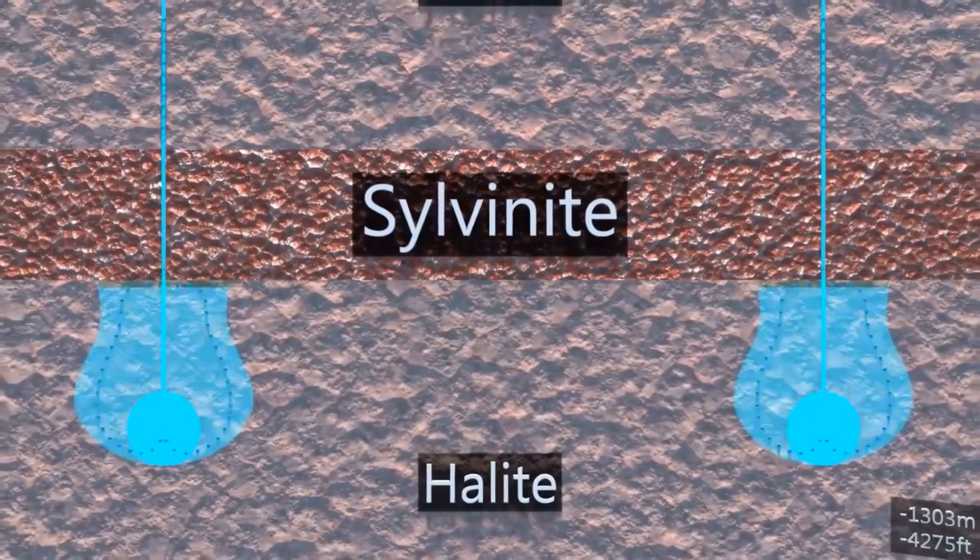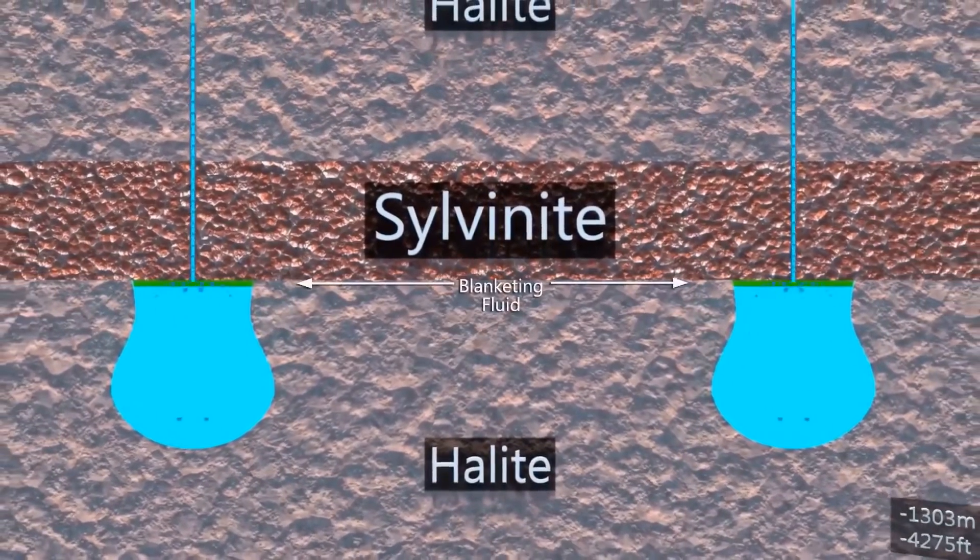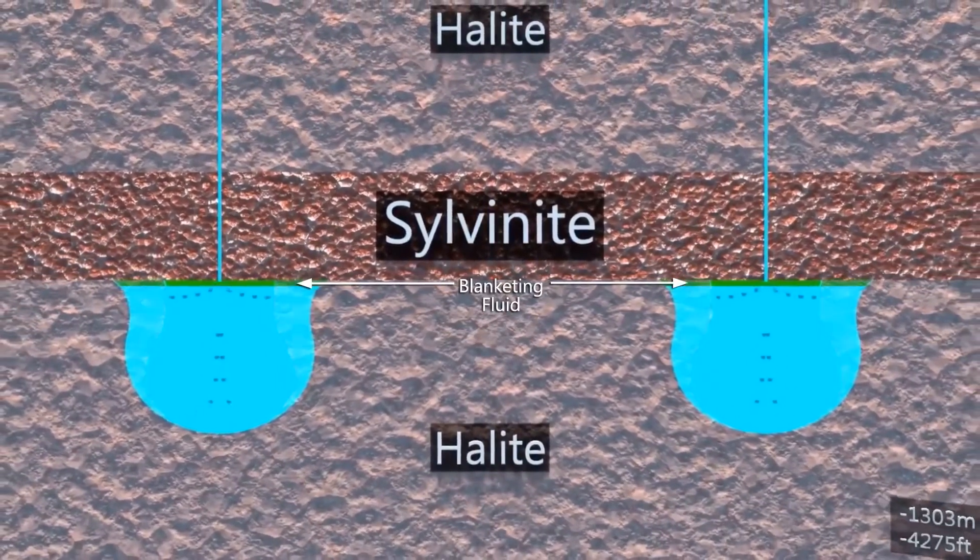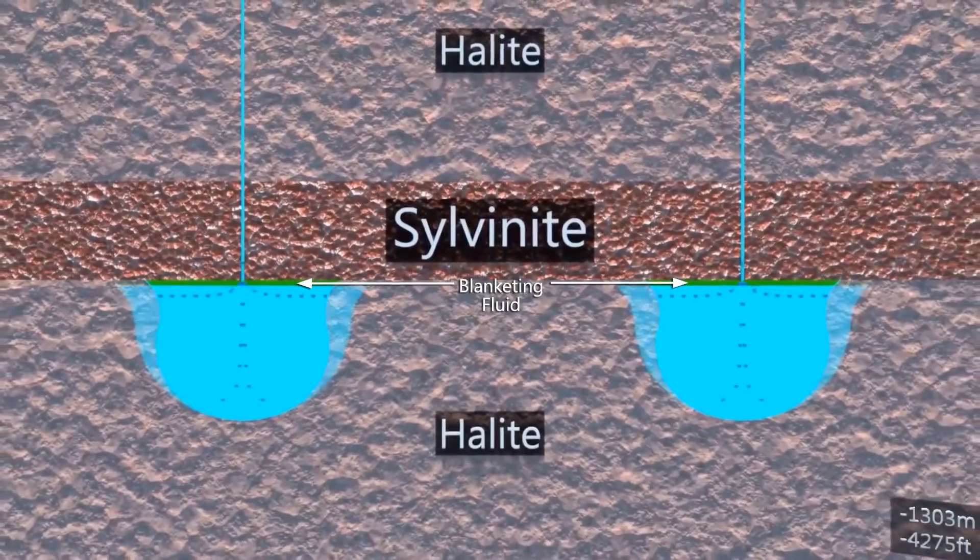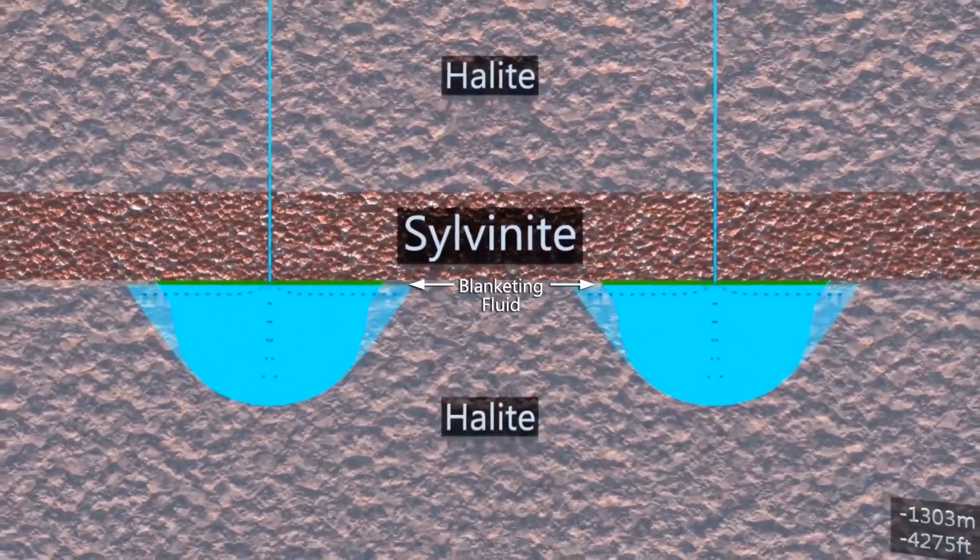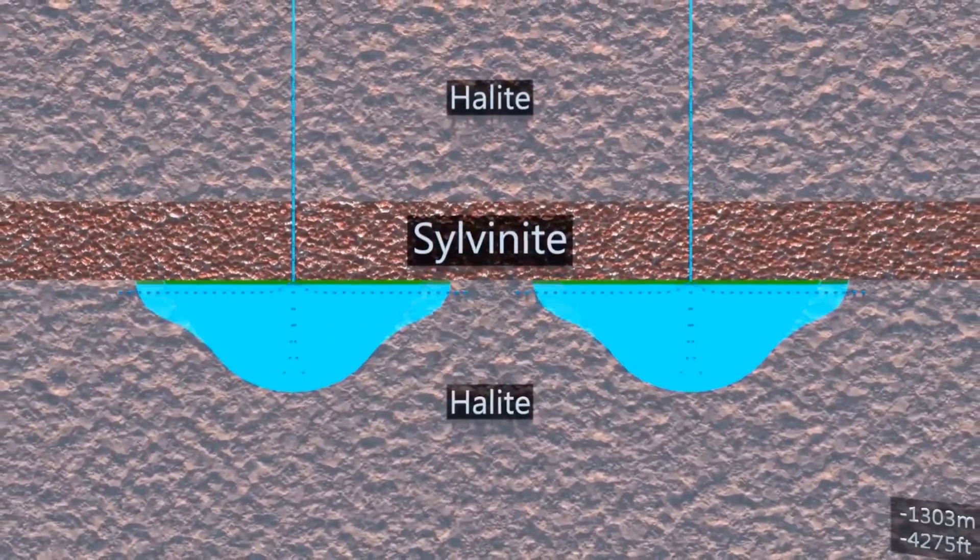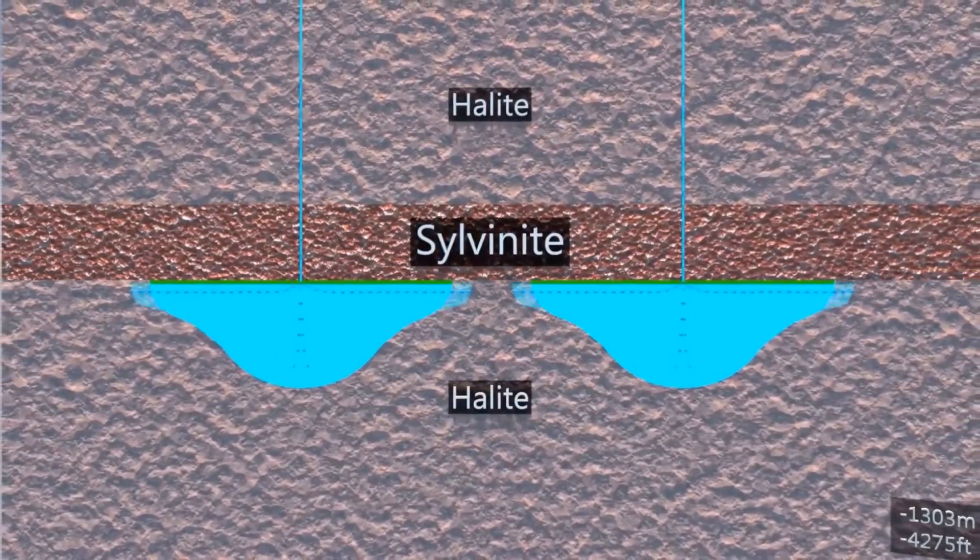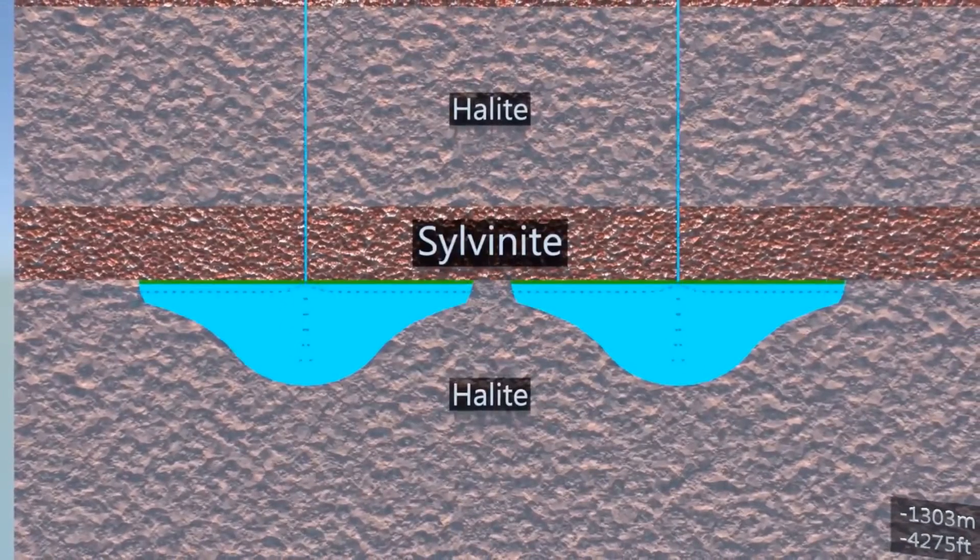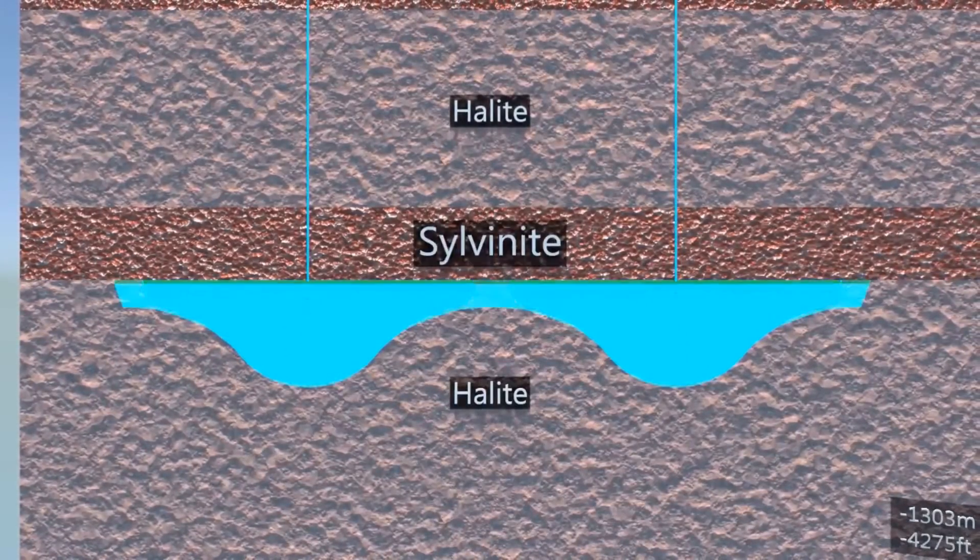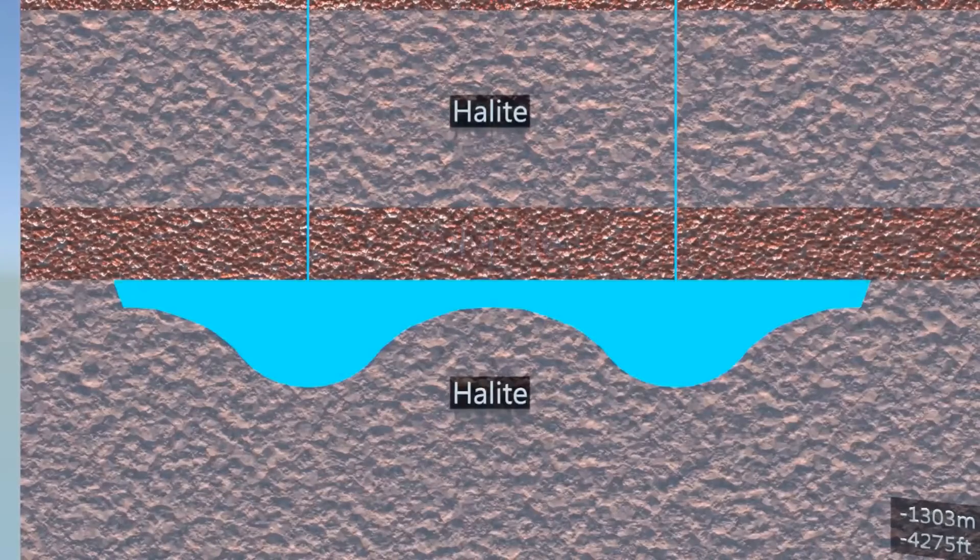The brine is returned to surface where it is disposed of by deep well injection. A blanketing fluid is added to the sump. The blanketing fluid will float on the top of the brine and prevent the solvent from moving up into the Esterhazy member. The roof of the cavern is developed as the sump grows horizontally. The objective of this process is to connect the two sumps together. Once the sumps are connected, mining of the Esterhazy member can begin.